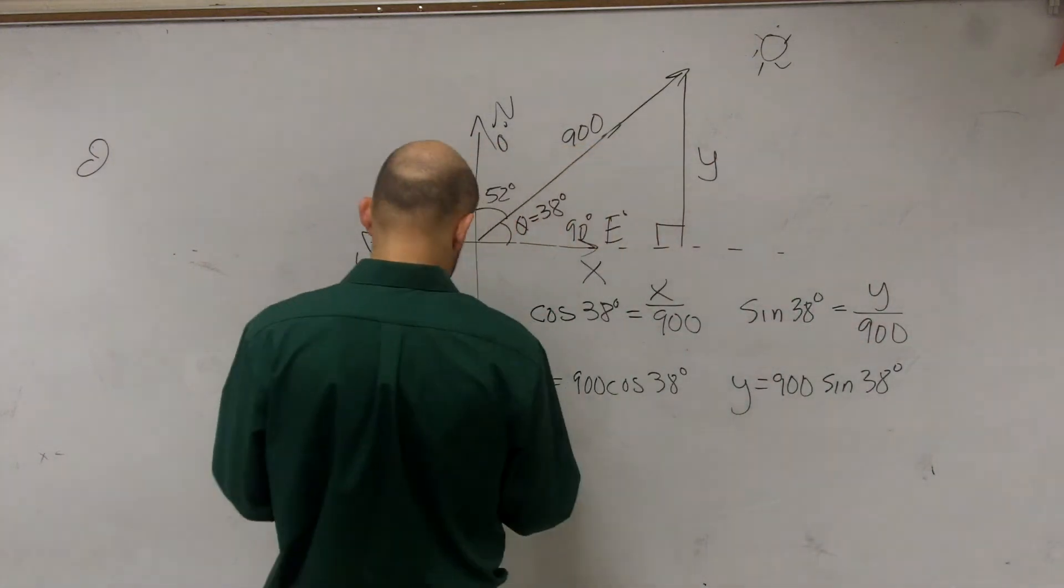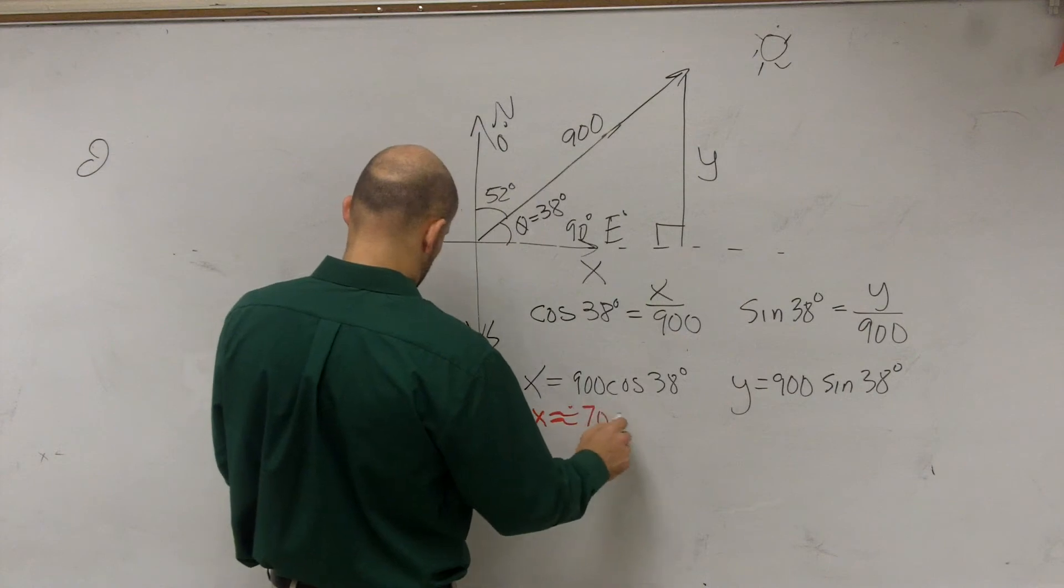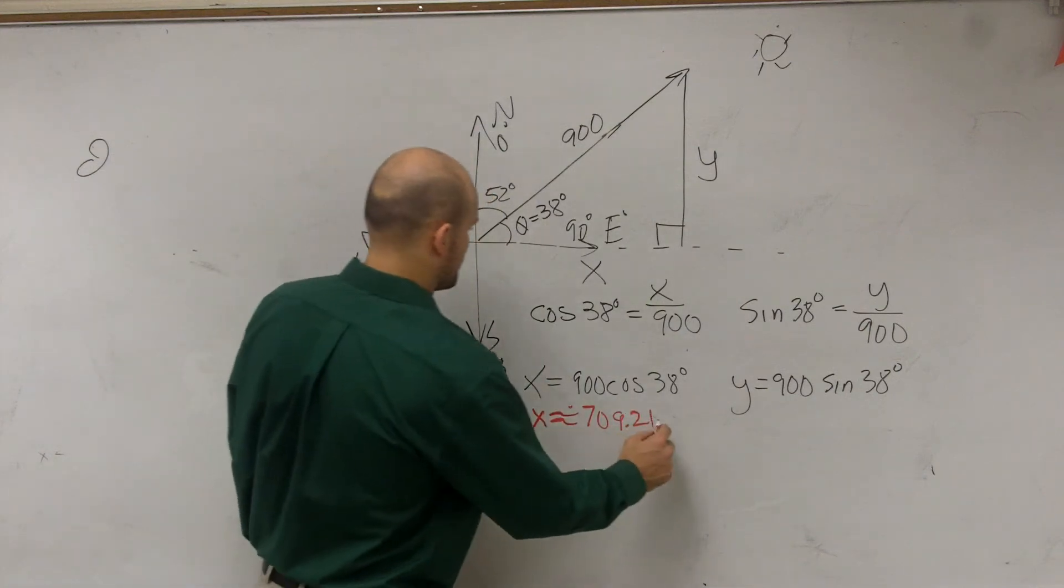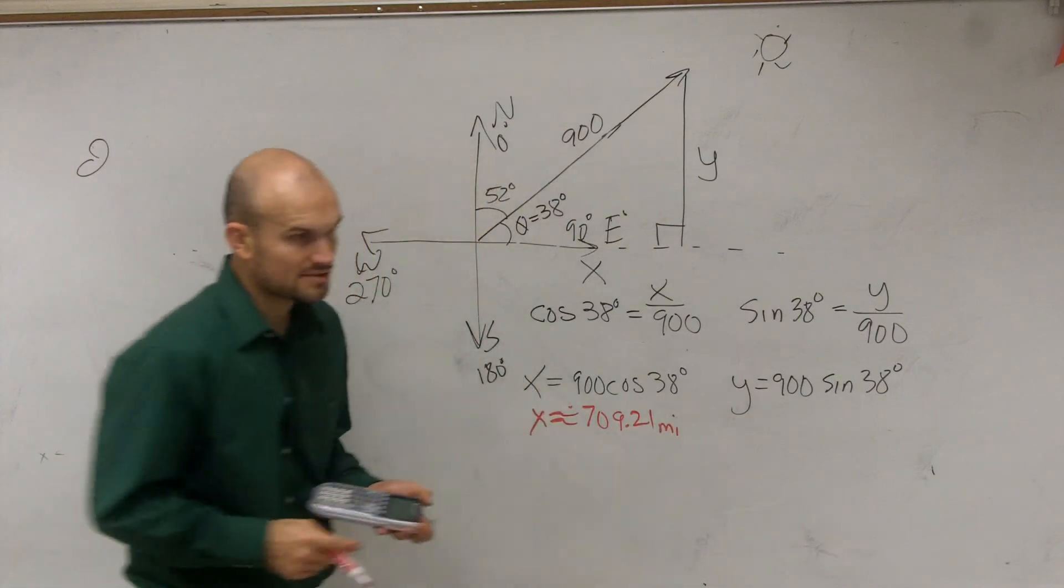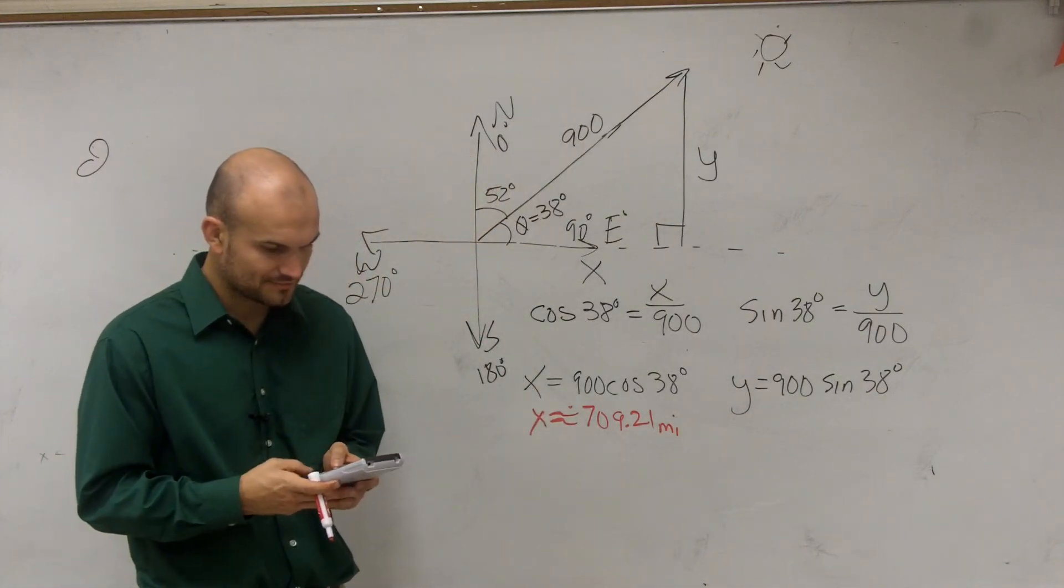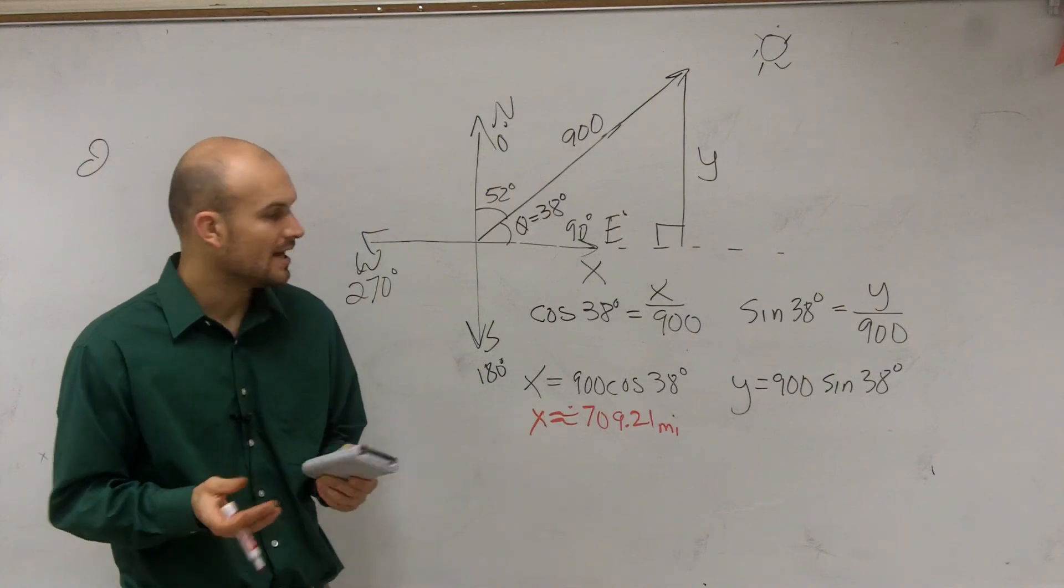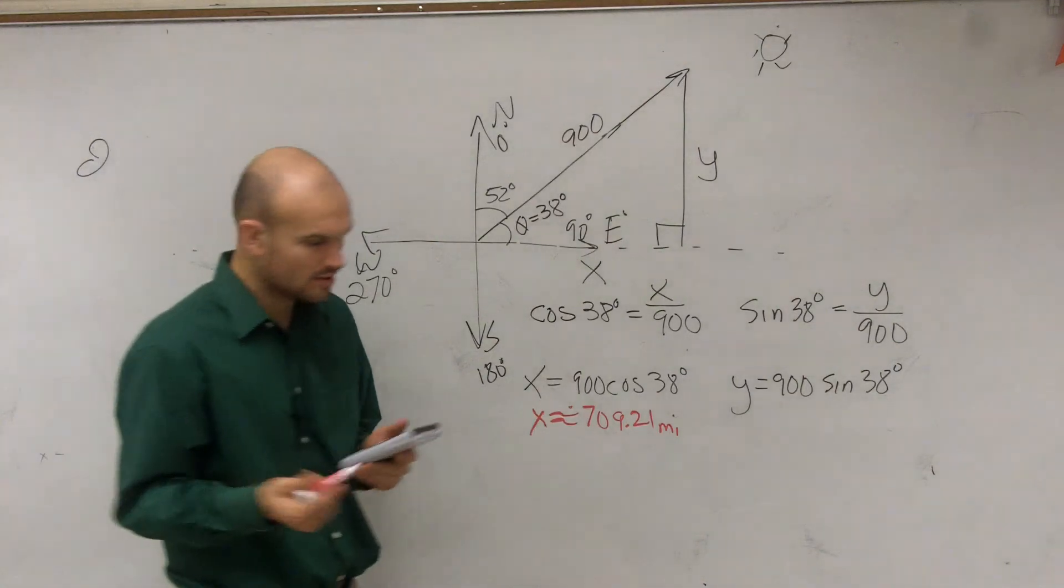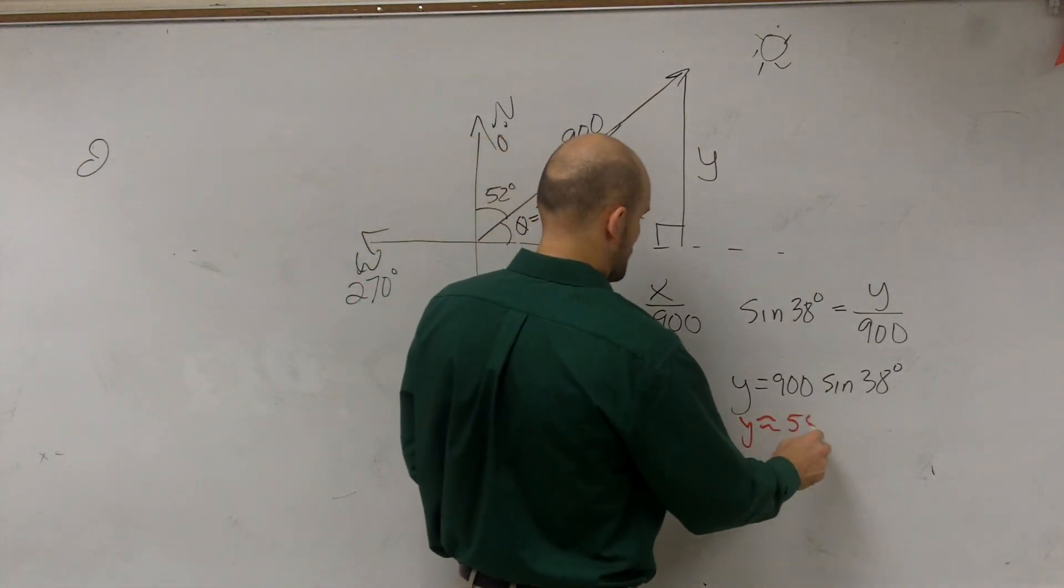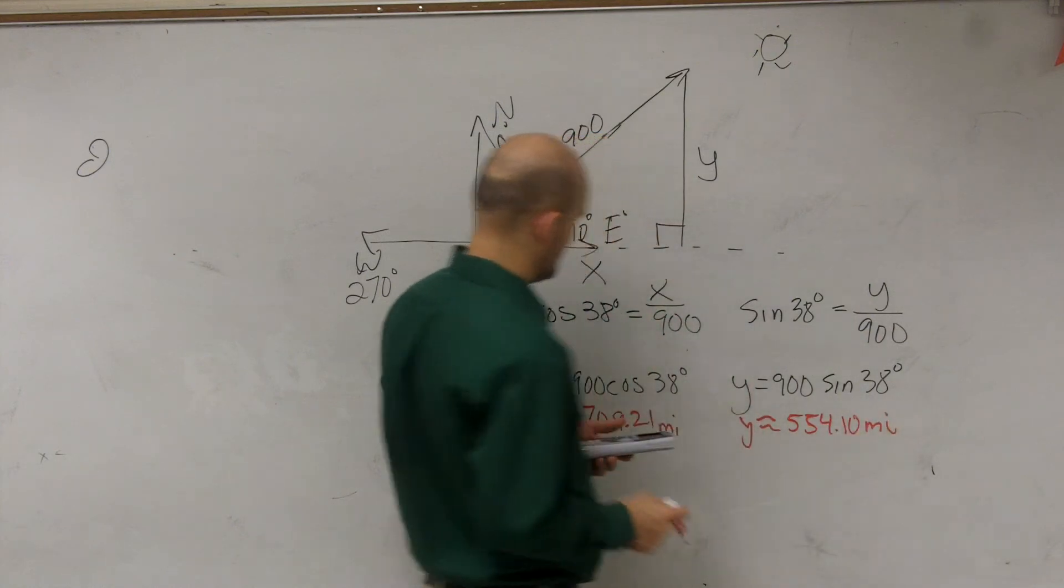and we're talking about miles, right? Miles. Then I do sine of 38 times 900 and I get 554.10 miles.